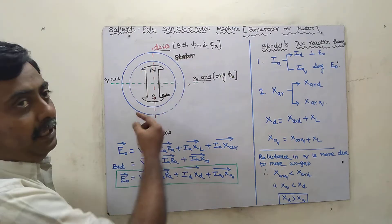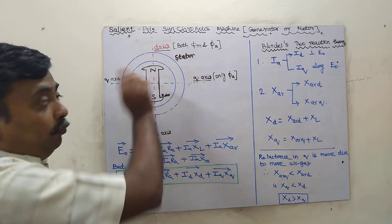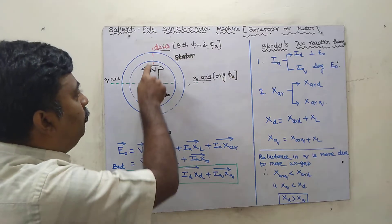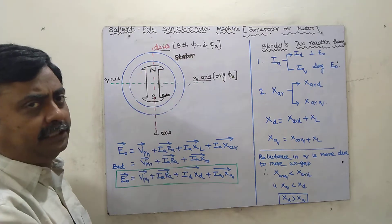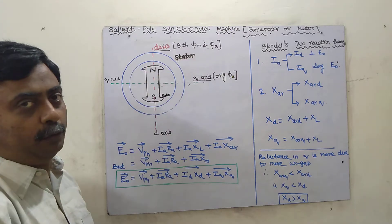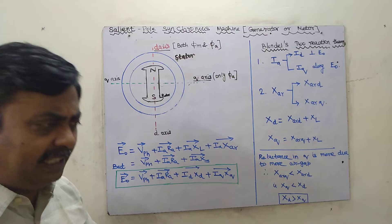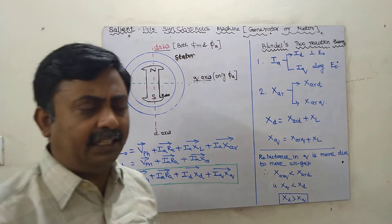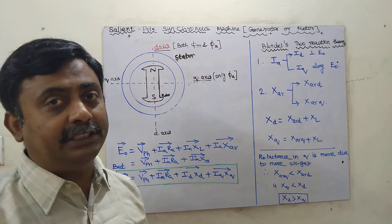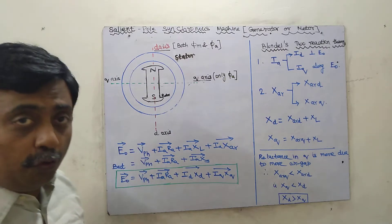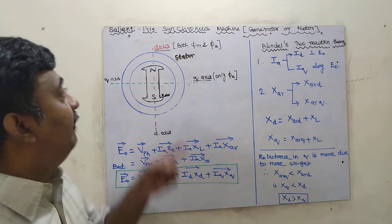In the salient pole synchronous machine, the stator is round in shape and produces a rotating magnetic field, but the rotor won't be round — the poles will be projected. Here I have shown a two-pole machine, though normally it will be a four-pole machine, with a north pole and south pole. The key difference is the air gap.